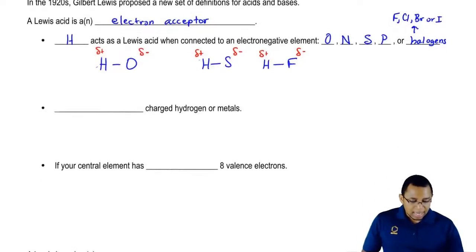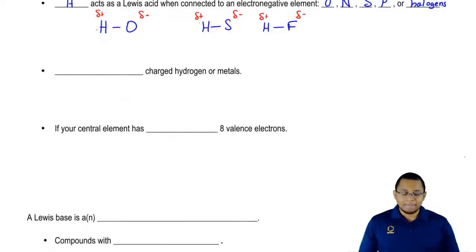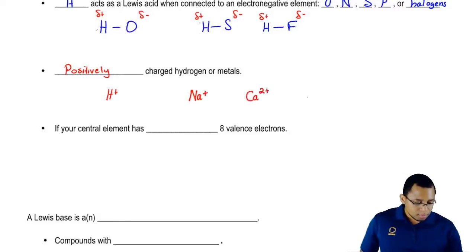The second type is anytime we have a fully positively charged hydrogen or metals. So H+ would be an example of a Lewis acid because it accepts electrons. Electrons are negative, it's positive, opposites attract. If we have positive metals, since they're all positive, they'll attract negative electrons.